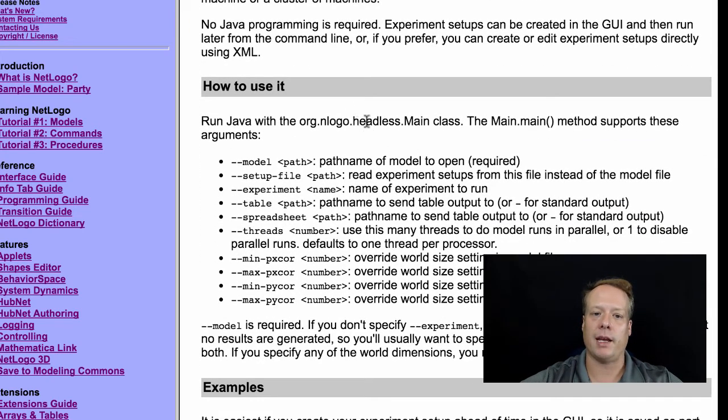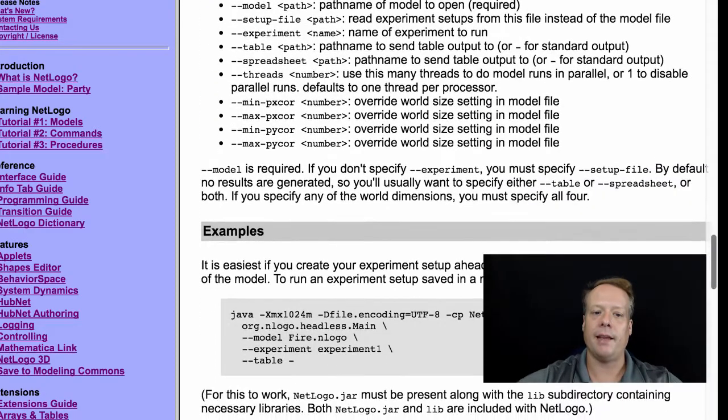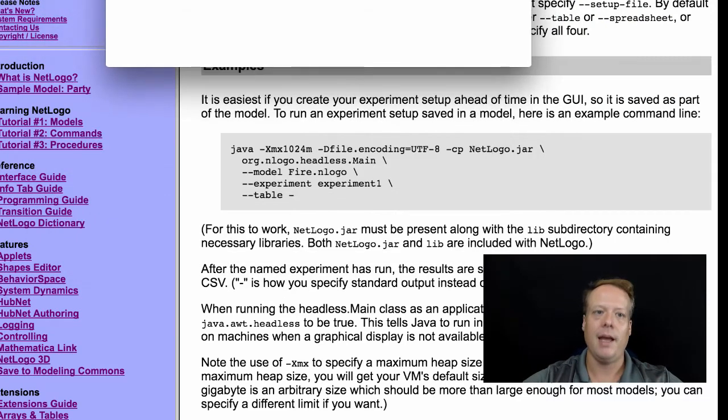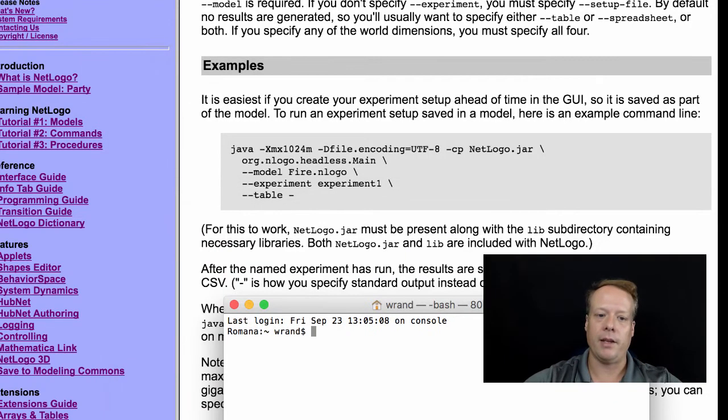So this actually involves running a completely separate NetLogo Java class called the headless main. And in the headless main, essentially, all you need to do is you go to a command line. So on the max, we have something called terminal. And you go to wherever your code is. And in your code, you can actually tell it to run a particular experiment. Now, you have to have defined the experiment in behavior space ahead of time. But if it's there, then you can quickly get in and access your code.